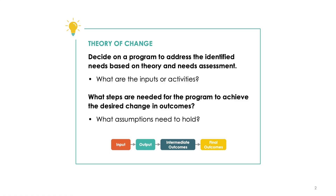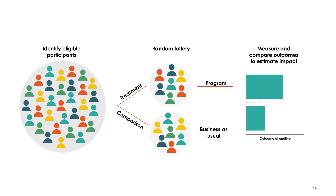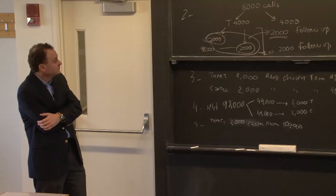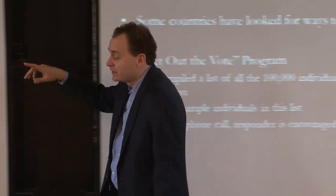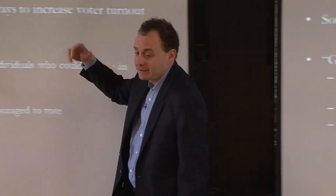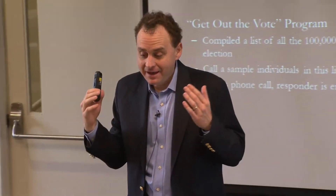We will take an in-depth look at each step in the design and implementation of a randomized evaluation using real-world examples, from developing a theory of change to conducting the randomization process and navigating design challenges and ethical considerations. We will also learn strategies to maximize policy impact and assess the generalizability of research findings.